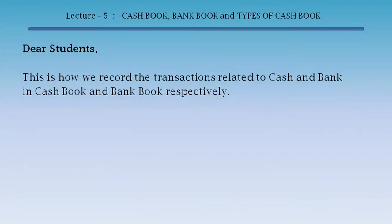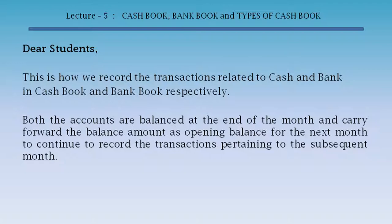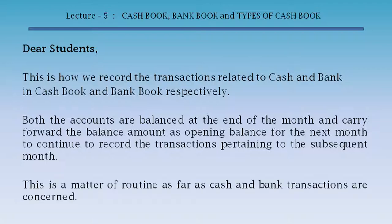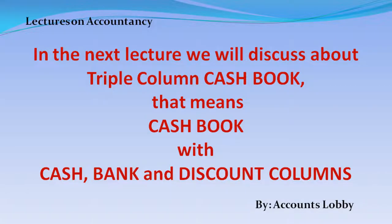Dear students, this is how we record transactions related to cash and bank in the cash book and bank book respectively. Both accounts are balanced at the end of the month and the balance is carried forward as the opening balance for the next month to continue recording transactions for the subsequent month. In the next lecture, we will discuss about the triple column cash book — that means the cash book with cash, bank and discount columns.